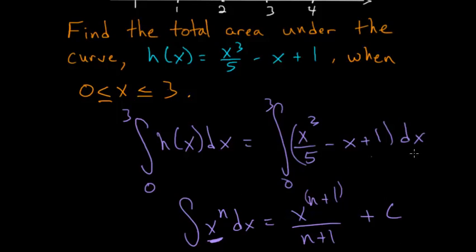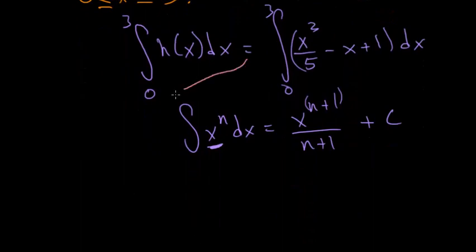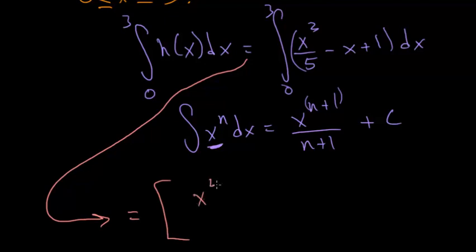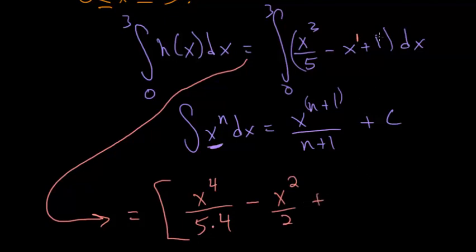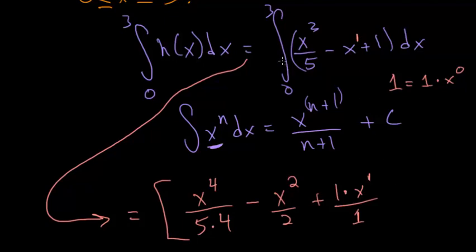Applying this rule to our problem: the integral becomes x⁴/20 — since we increase x³ to x⁴ and divide by 4, then divided by 5 gives 20 — minus x² divided by 2, since x is x¹ increased to x². Then plus 1, which is 1·x⁰, increases to 1·x¹ divided by 1, giving just x. Since this is a definite integral, we don't add a constant, but we evaluate the expression at 0 and at 3.